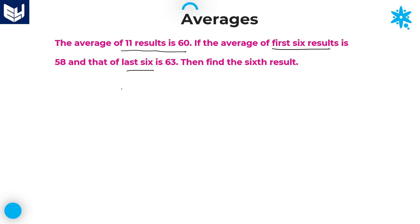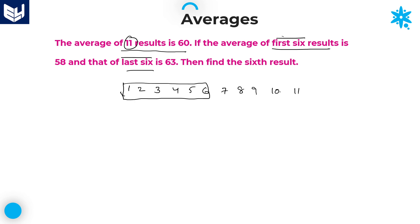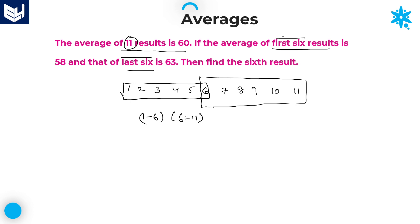The average of first 6 results is 58 and that of last 6 is 63. Find the 6th result. I will write all the numbers in sequence up to 11, because total 11 results are there: 1, 2, 3, 4, 5, 6, 7, 8, 9, 10, 11. According to the information, he is talking about first 6 and last 6. First 6 means 1 to 6, whereas last 6 means 6 to 11. The 6th result is repeated twice.